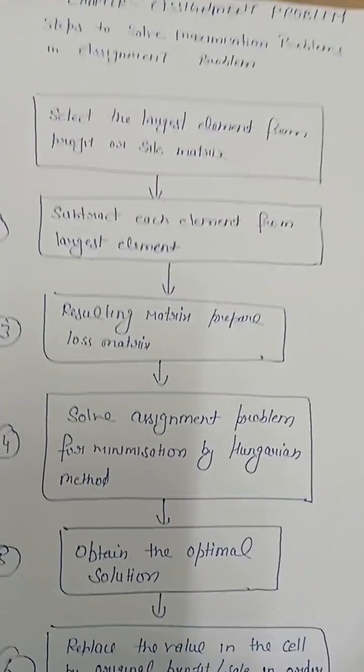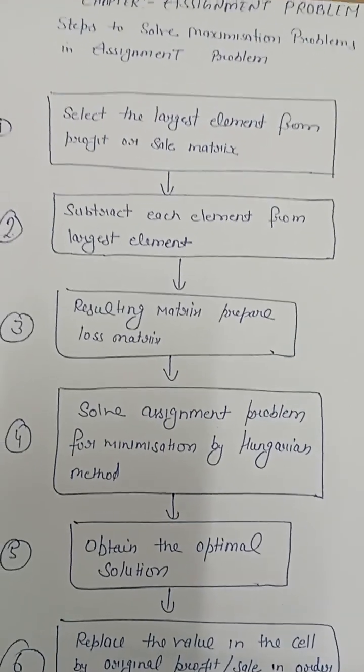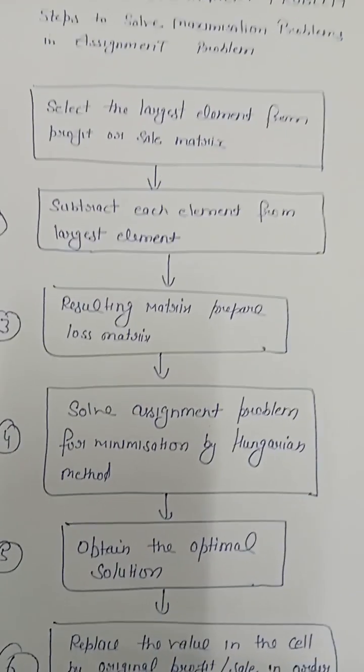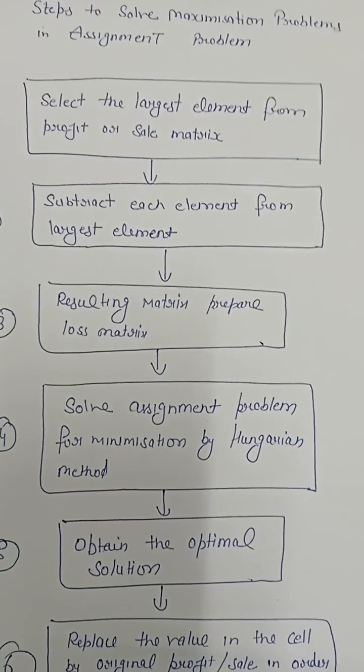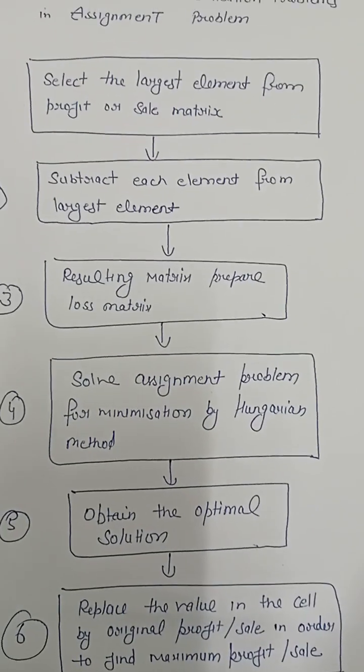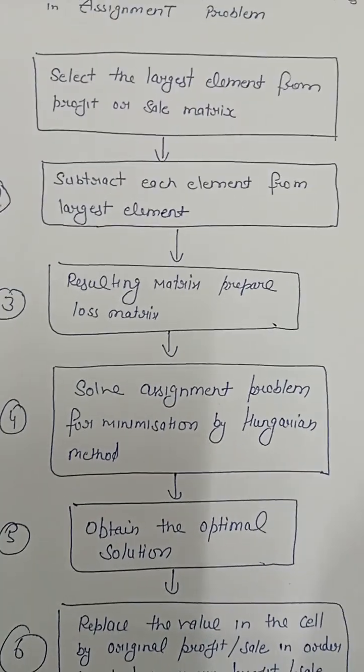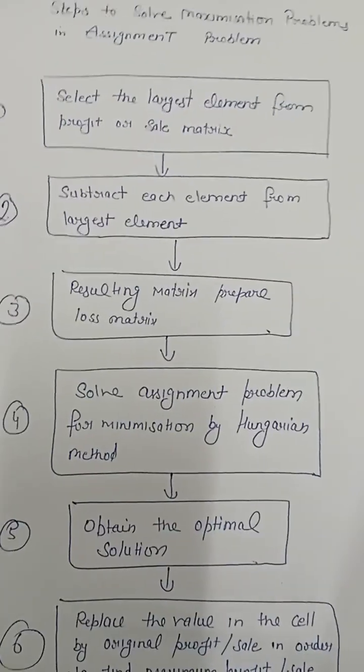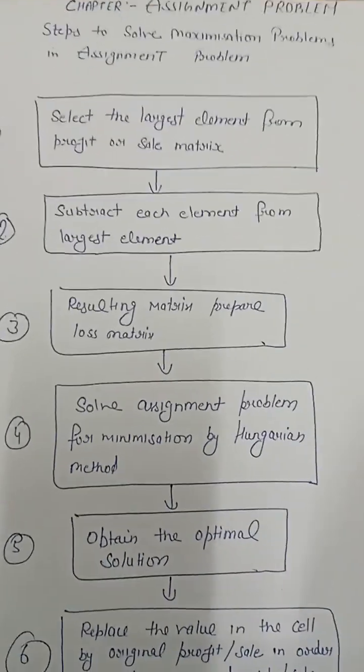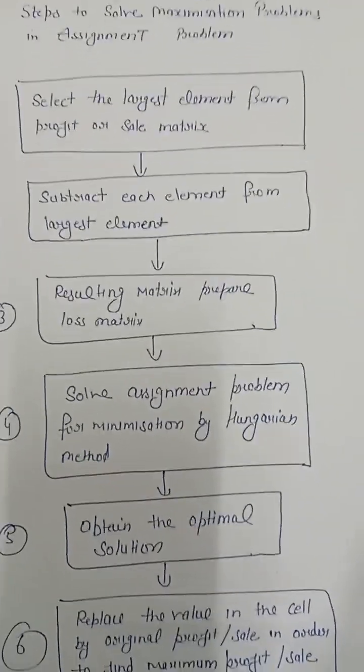And after that, we reduce the table by column reduction. And after that, we draw the assignment and make the assignment. According to the matrix, if our matrix is 5 by 5 and we get 5 assignments, then our solution is the optimum solution.